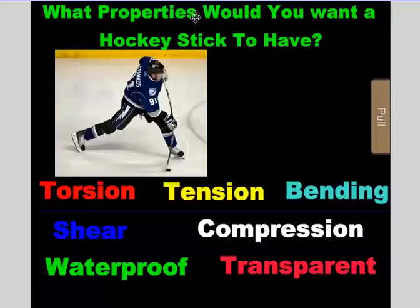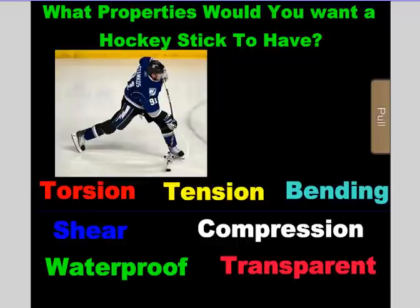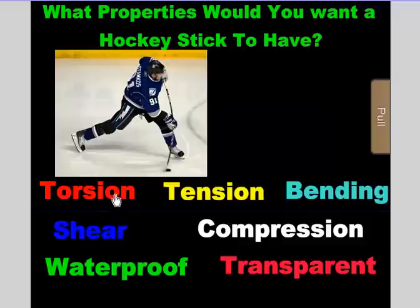How about a hockey stick? What properties would you want a hockey stick to have? A lot of people don't know this, but if you take the current hockey sticks that are made of carbon fiber material, they bend — they bend a lot. When you shoot with them, it looks like this. This is Steve Stamkos taking a slap shot. Does a hockey stick have torsion? Can you take a hockey stick and twist it? No, you can't twist it.